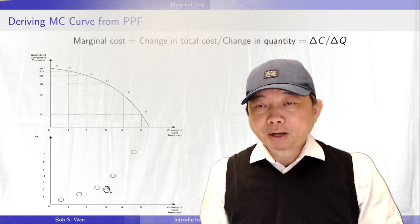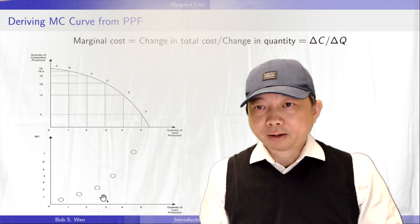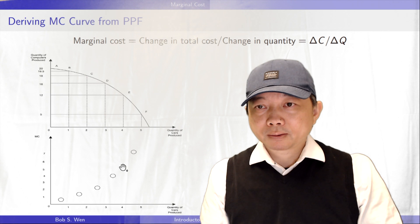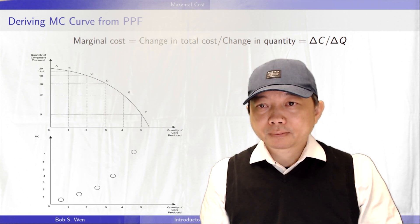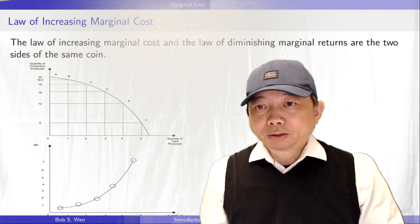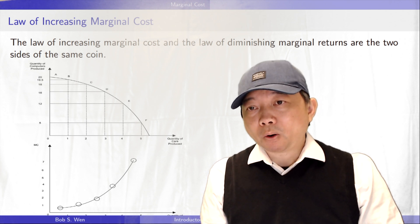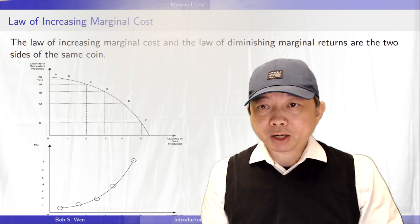We see that the marginal cost is increasing as more cars are made. It is upward sloping. We know that the law of increasing marginal cost and the law of diminishing marginal returns are the two sides of the same coin.